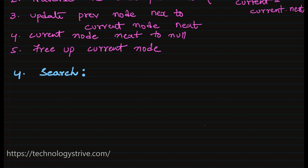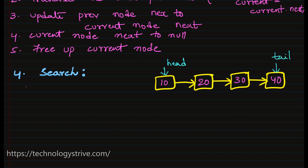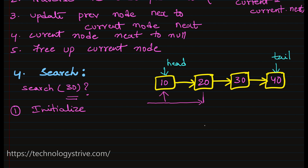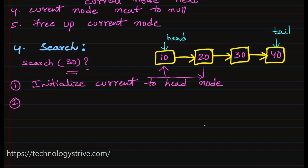Given a linked list, we want to find whether an element exists or not. For example, given this linked list, we want to know whether element 30 exists. To search for an element, we traverse the list and at every node we check whether the data of the current node matches the given value. Step 1: initialize current to head node.